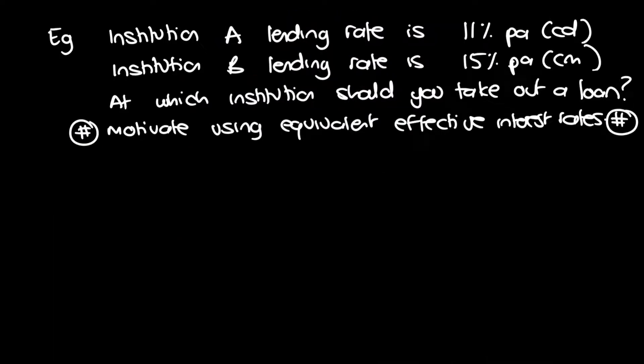The next example: Institution A's lending rate is 11% per annum compounded daily, and Institution B's lending rate is 15% per annum compounded monthly. The question is: which institution should you take a loan from? Motivate using the equivalent effective interest rate. There are numerous ways to solve this, but we'll use equivalent effective interest rates as instructed.